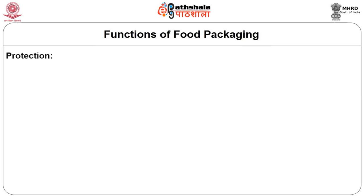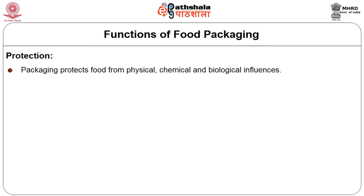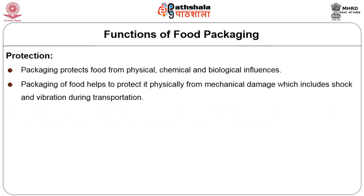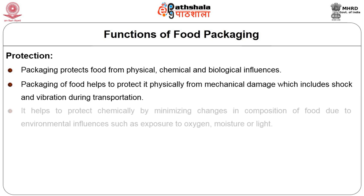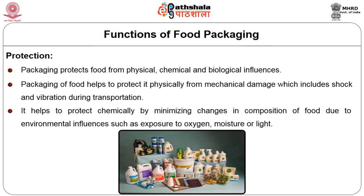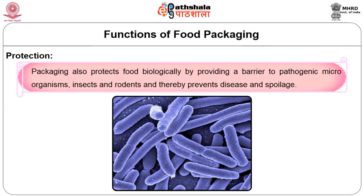The first function is Protection. Packaging protects food from physical, chemical, and biological influences. Packaging of food helps to protect it physically from mechanical damage which includes shock and vibration during transportation. It helps to protect chemically by minimizing changes in composition of food due to environmental influences such as exposure to oxygen, moisture, or light. Packaging also protects food biologically by providing a barrier to pathogenic microorganisms, insects, and rodents, and thereby prevents disease and spoilage.